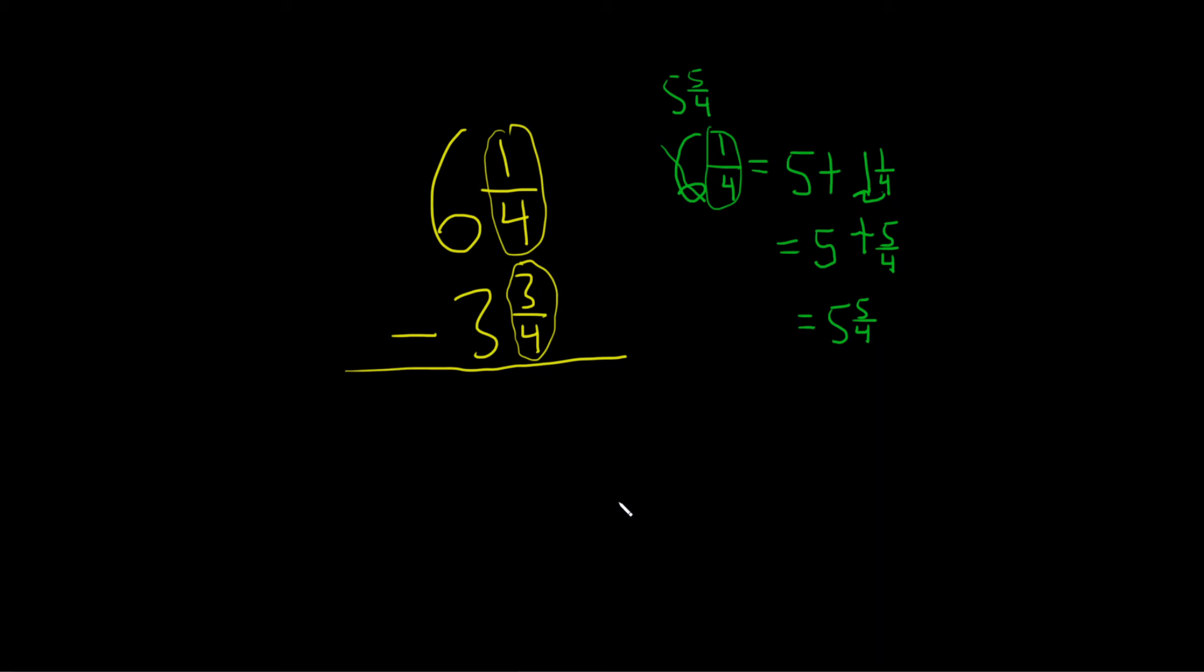Okay, let's go ahead and rewrite our problem. I'll do it down here. So we have 5 and 5 fourths minus 3 and 3 fourths. Then we draw a line like this.